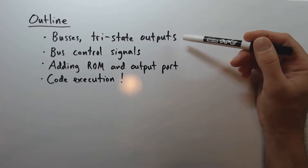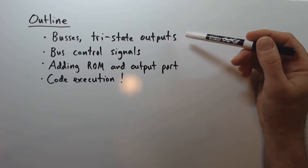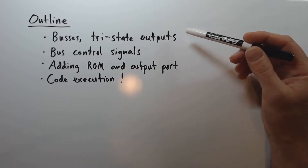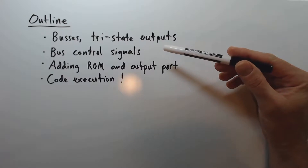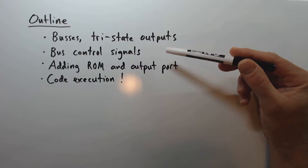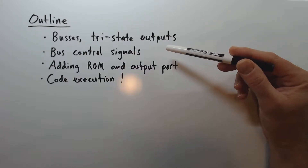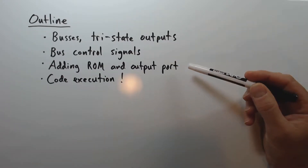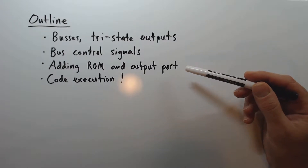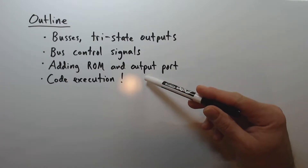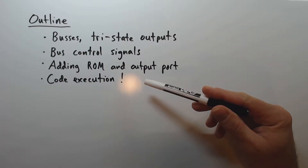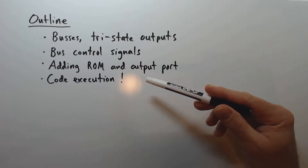Welcome to episode nine. In this episode, we're going to talk about buses and tri-state outputs, the fundamental mechanisms that allow us to add arbitrary numbers of devices to our microcomputer system. We'll talk about bus control signals and synchronized data transfers between the CPU and other devices. We will add a ROM device and an 8-bit output port, and show actual code execution using a prototype version of the circuit.